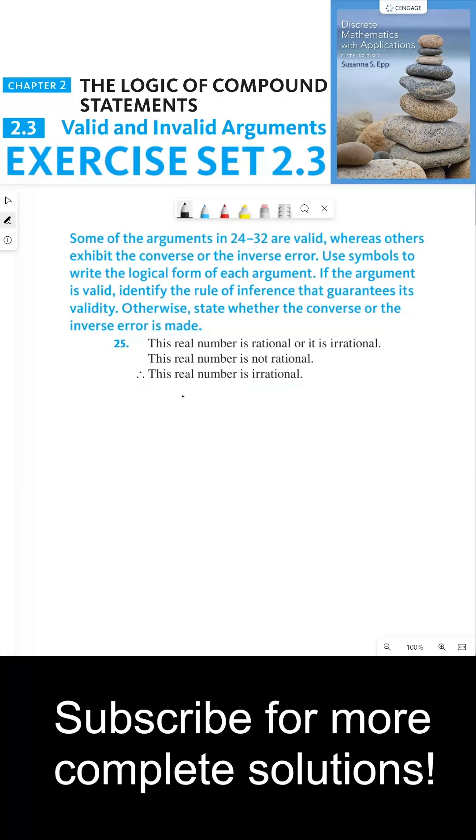So put in statement forms, if we say this real number is rational is our P, and we say it is irrational is Q, then the argument form is P or Q. The second line is, this real number is not rational, which is not P. And then the conclusion is, this real number is irrational, which is Q.